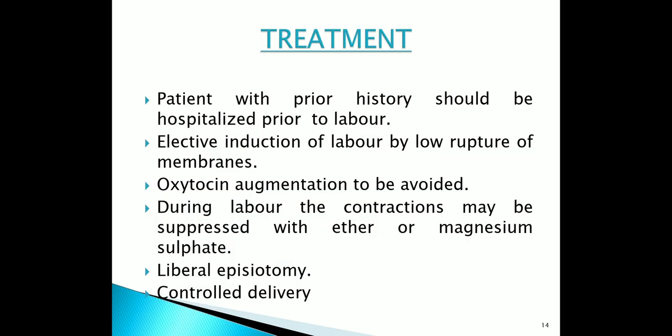The patient having a previous history of precipitate labor should be hospitalized prior to labor. During labor, uterine contractions may be suppressed by administration of ether or magnesium sulfate. During contraction, delivery of the head should be controlled. Liberal episiotomy should be done. Controlled delivery is helpful. Oxytocin augmentation is to be avoided.